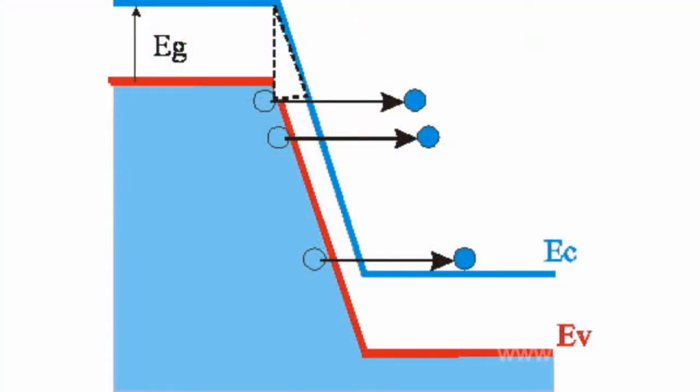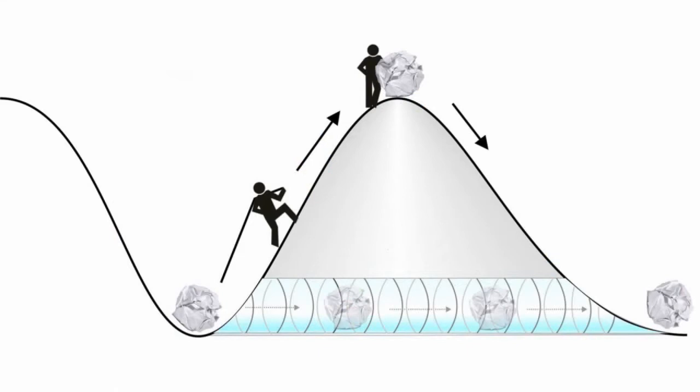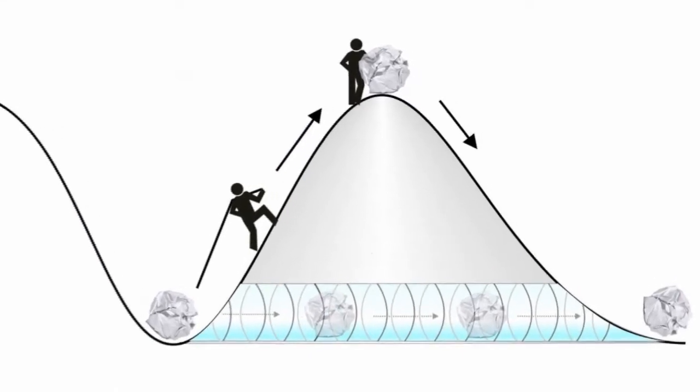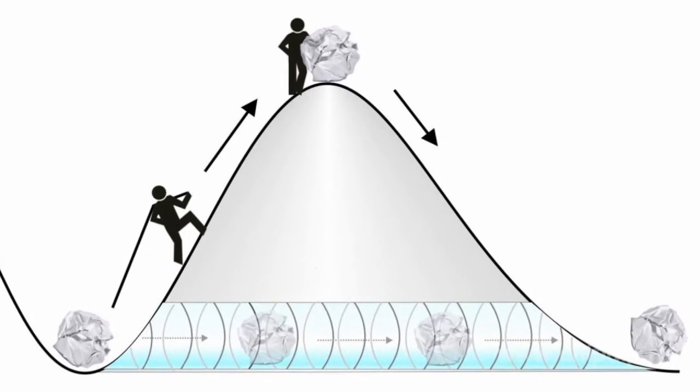Such an effect when electrons pass through energy barrier with height exceeding electron energy is called a tunnel breakdown. It's based on tunnel effect, that is, electrons penetrating through a potential barrier with height exceeding charge carriers energy.